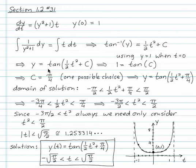Apply a tangent to both sides. It's y equals tangent of 1 half t squared plus c. And then using our initial condition, 1 is equal to tangent of c.